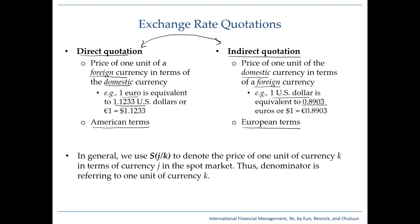In this textbook, we generally use S for spot rate, and we use the expression S(J/K), meaning we are talking about the price of one unit of currency K — whatever that happens to be, whether that's Japanese yen or US dollar — expressed in terms of currency J.